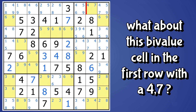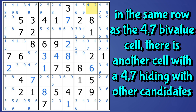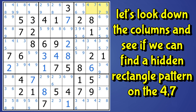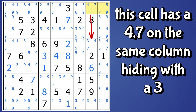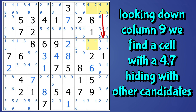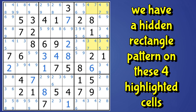Let's take a look at this bivalue cell in the first row — it has the candidates four and seven. In the same row, this cell in column nine also has the candidates four and seven hiding together with a five and a nine. Looking down column eight, this cell has a four and seven hiding together with a three. And looking down column nine, this cell has a four and seven hiding with a three and a five. So we've identified the hidden rectangle formed by these four cells.